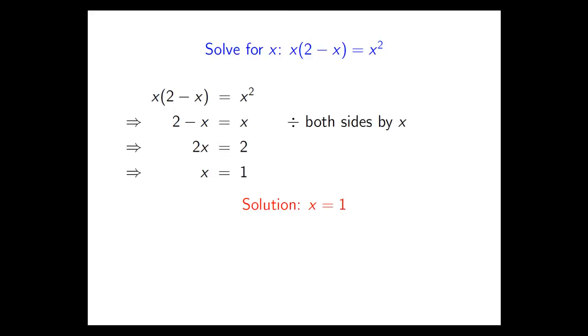So we might be inclined to claim that the solution to this problem is that x equals 1. And that certainly is a perfectly satisfactory solution to the problem. Substituting x equals 1 into that equation at the top will give you a left and right hand side that are both the same. But there is a problem with this process. We divided both sides of the equation by a variable, x.